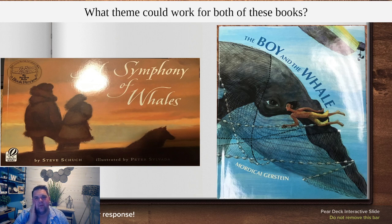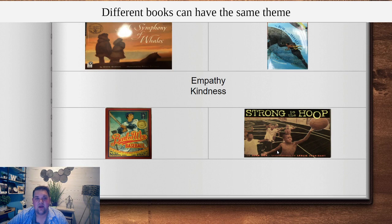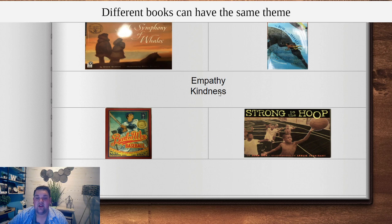What theme could work for both of these books? Enter that into PlayPosit and then I'll tell you my thinking. For Symphony of Whales and A Boy and a Whale, I feel like empathy would be a really great theme because the characters really care about and feel for the animals. Kindness as well, because they're constantly showing kindness to those whales. There are many others you could have chosen, like hard work, determination, or caring — those would all work as themes.